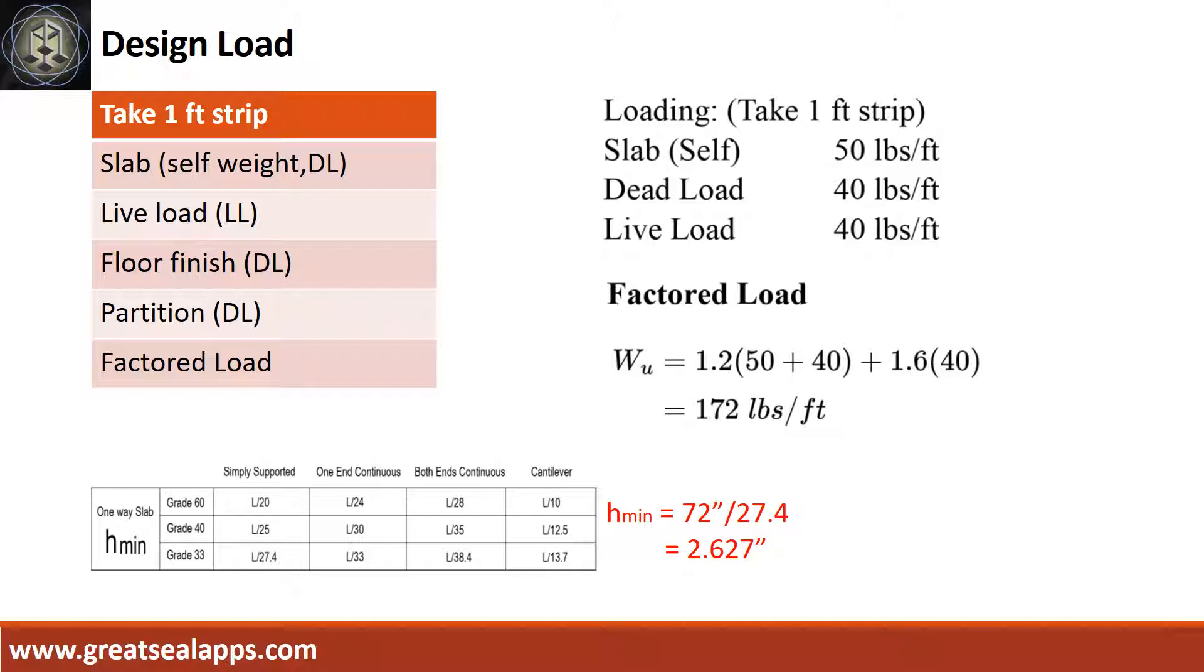The uniform load for 4 inches thick slab is 50 pounds per foot. A residential live load is 40 pounds per foot. Other dead load like floor finish and partition is 40 pounds per foot for a total factored load of 172 pounds per foot.